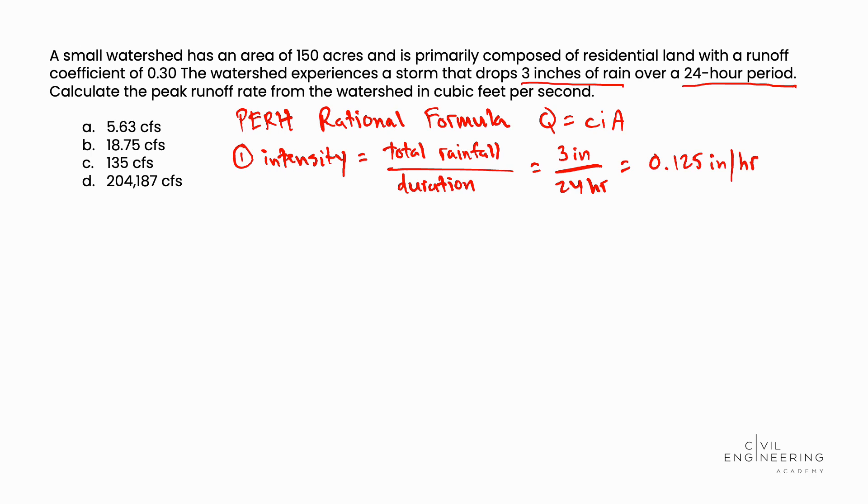In Step 2, we'll take our Rational Formula, Q equals C times I times A, and plug in our variables. C is the runoff coefficient given in the problem of 0.30, times the intensity which we just calculated of 0.125 inches per hour, multiplied by the area of 150 acres.